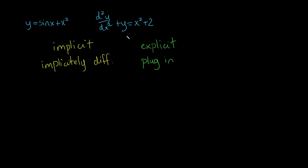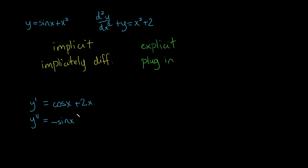Because our function is explicit, let's see how this is done. We have y, but we also have the second derivative of y, so we're going to want to calculate y double prime. Before we calculate that, it might be easier to calculate the derivative of the derivative. So, y prime: the derivative of sine of x is cosine of x, and the derivative of x squared is 2x. Now that we have y prime, y double prime is just the derivative of that: the derivative of cosine of x is negative sine of x, and the derivative of 2x is simply 2.